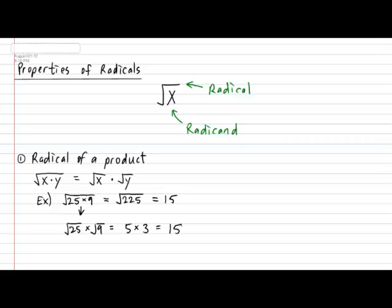Now let's take a look at the second property: the radical of a quotient, or a fraction. It could look like this: the square root of X over Y. This property states that the numerator and the denominator can be taken apart, each one possessing its own radical. So √(x/y) can be rewritten as √x over √y.